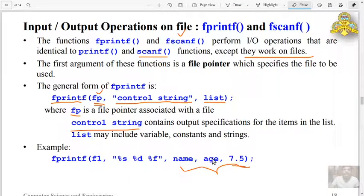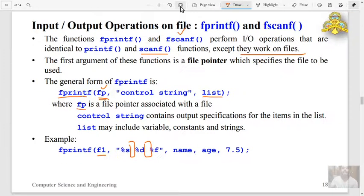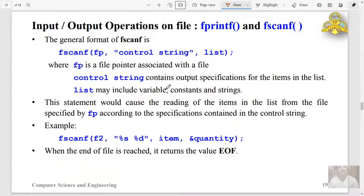Fprintf general format is fprintf fp, control string, list, where fp is a file pointer associated with the file. Control string contains output specification for the items in the list, and list may include variable, constants and strings. Example here is f1 is the pointer, control string, and name, age, and 7.5 is the list of variables and constants.